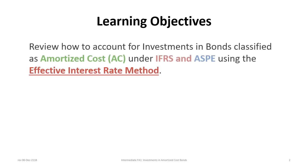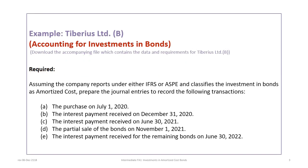This tutorial has one learning objective: to review how to account for investments in bonds classified as amortized cost, or AC, under both IFRS and ASPE using the effective interest rate method. This tutorial follows scenario 2 of the Tiberius B problem, so please make sure you download the correct file and review the data and requirements prior to proceeding.